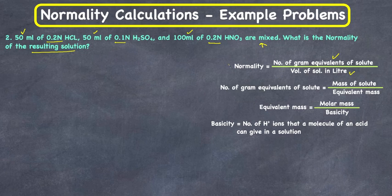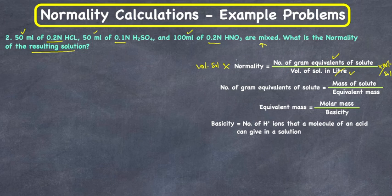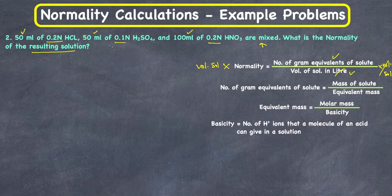To calculate gram equivalents, we rearrange the normality formula. Multiplying both sides of N = equivalents/volume by volume gives us: gram equivalents of solute = normality × volume of solution. Let's use this formula for all three acids.